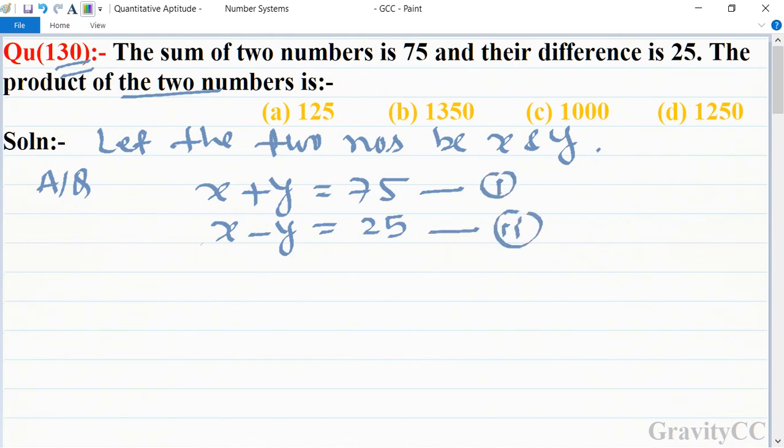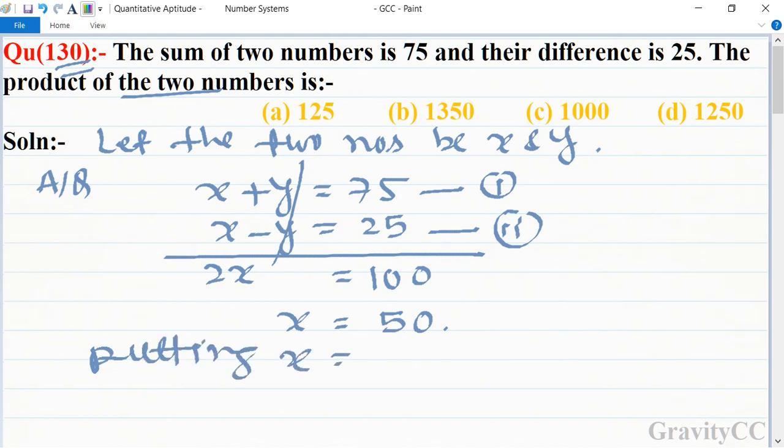Let's suppose this one is the second equation. After adding, 2x is equal to 100, so x is equal to 50. Putting x is equal to 50 in equation first, we get 50 plus y is equal to 75.